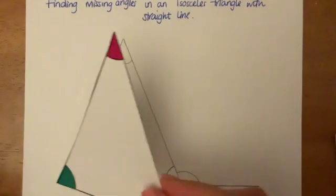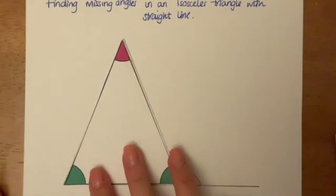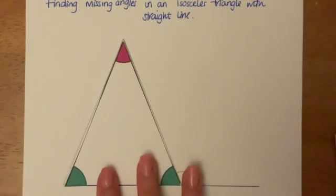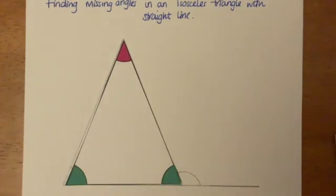So here is my pre-made triangle from earlier. What we know about an isosceles triangle is that two angles are the same and one is different.